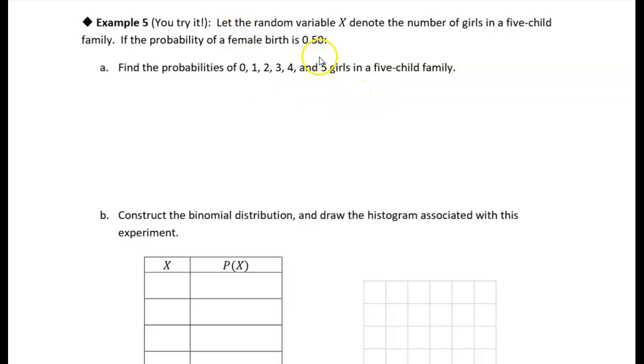All right, so in this example, we're told to define the random variable X to be the number of girls in a five-child family. And we're told that the probability of a female birth is 0.5.